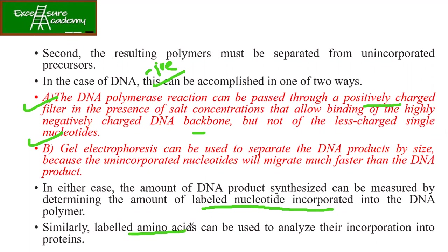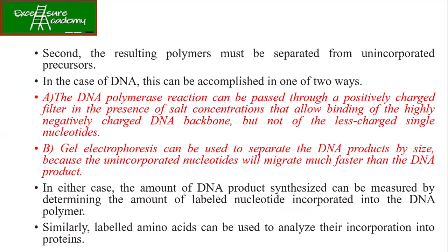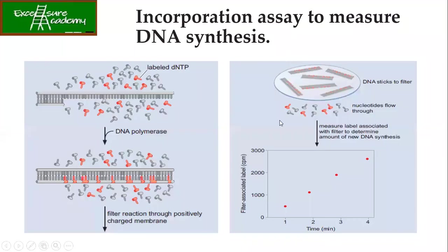Similarly, hum use labelled amino acids whenever proteins are getting synthesized. Once you can calculate the amount of labelled nucleotide, this will tell you the activity of the DNA polymerase. Whatever the enzyme units you want to talk about, you can convert in that way. This is how you are actually going to measure the activity of the DNA polymerase.